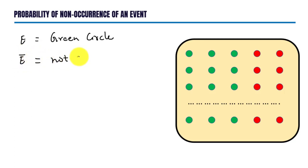Let us consider that number of green circles equals m. This implies number of red circles, or not green circles, equals n minus m, because total number of circles equals n. Now probability of event E...